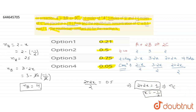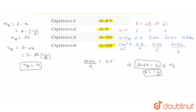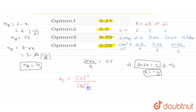Now we find the equilibrium constant Kc. For the reaction A + 2B → 2C, the expression is Kc = [C]² / ([A]¹ × [B]²), because the stoichiometric coefficient of C is 2, A is 1, and B is 2. This is concentration of products to the power of stoichiometric coefficient divided by concentration of reactants to the power of stoichiometric coefficient.